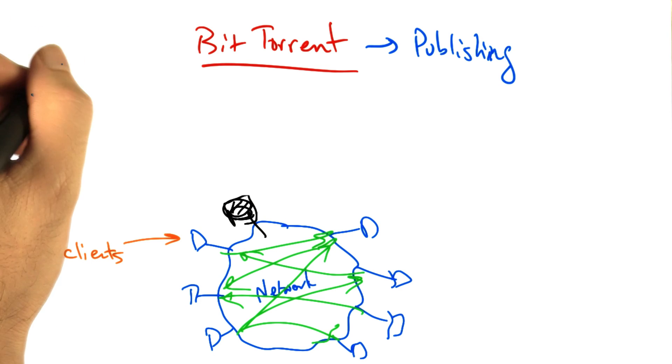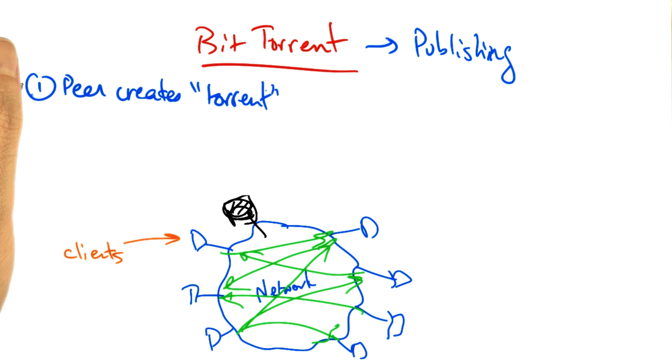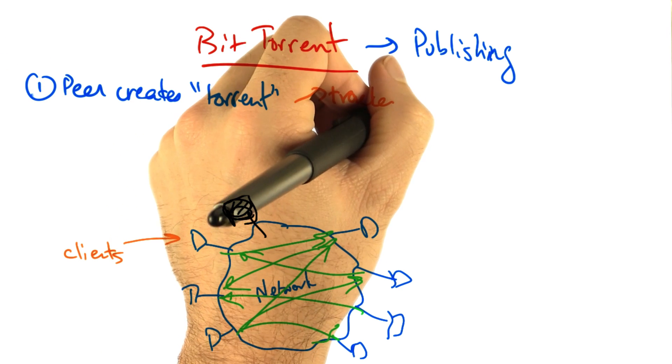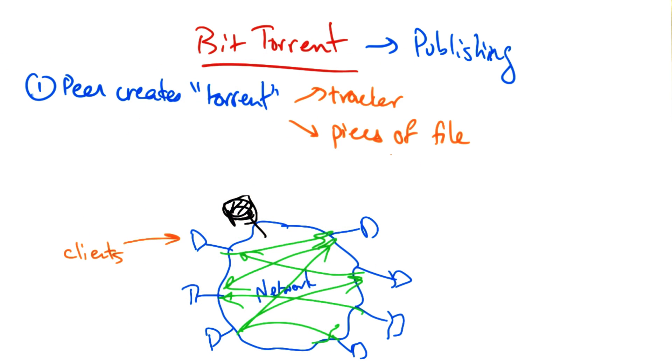BitTorrent has several steps for publishing. First, a peer creates what's called a torrent, which contains metadata about the tracker and all of the pieces of the file in question, as well as a checksum for each piece of the file at the time the torrent was created.